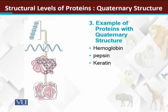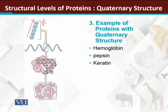In the diagram we have four structural levels. First of all, the proteins are formed in a linear form — the linear chain — this is the primary structure of proteins, the polypeptide chain. The second step is the secondary structure. Then this is the tertiary structure, and this is the quaternary structure.